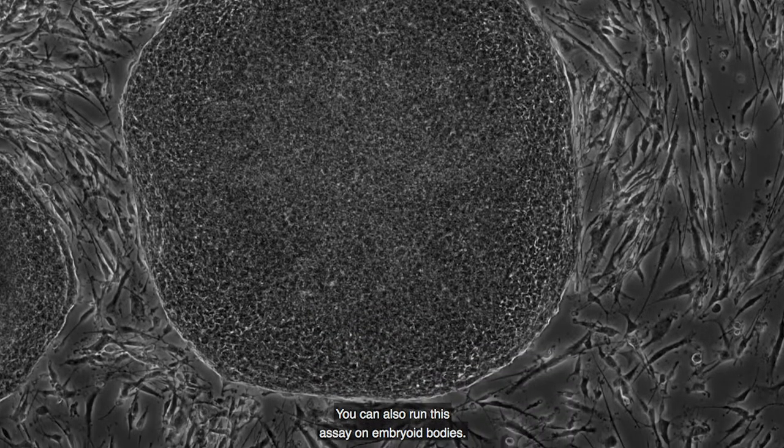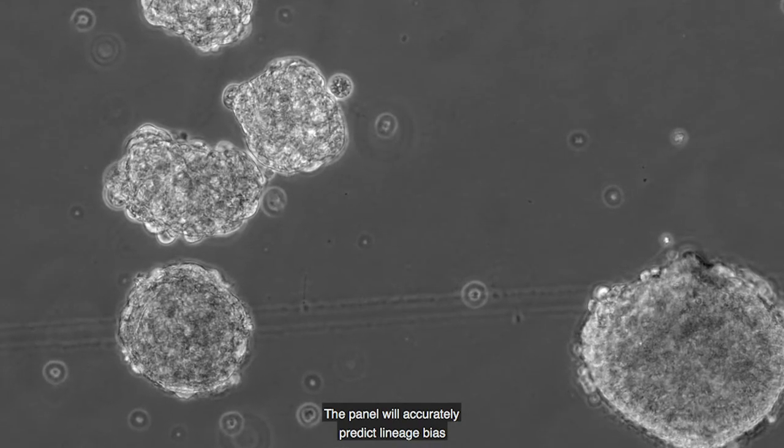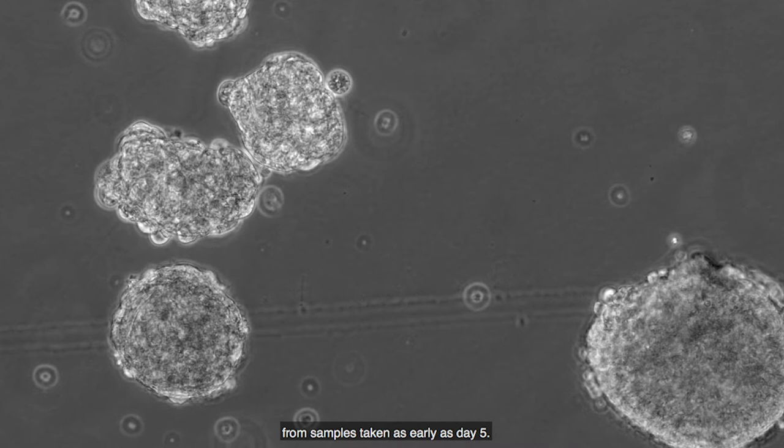You can also run this assay on embryoid bodies. The panel will accurately predict lineage bias from samples taken as early as day five.